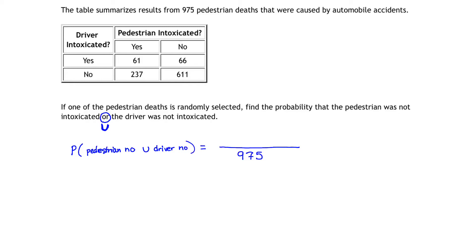For the numerator, all I have to do is get the number of elements in the union. Starting with the first part, where the pedestrian was not intoxicated — if we look at our chart, we notice that the pedestrian was not intoxicated in this second column. That means there are two boxes to focus on: in the first box there are 66 pedestrians not intoxicated, and in the second box there were 611 pedestrians not intoxicated. So I have to add those two elements up to start with for that part of the set.